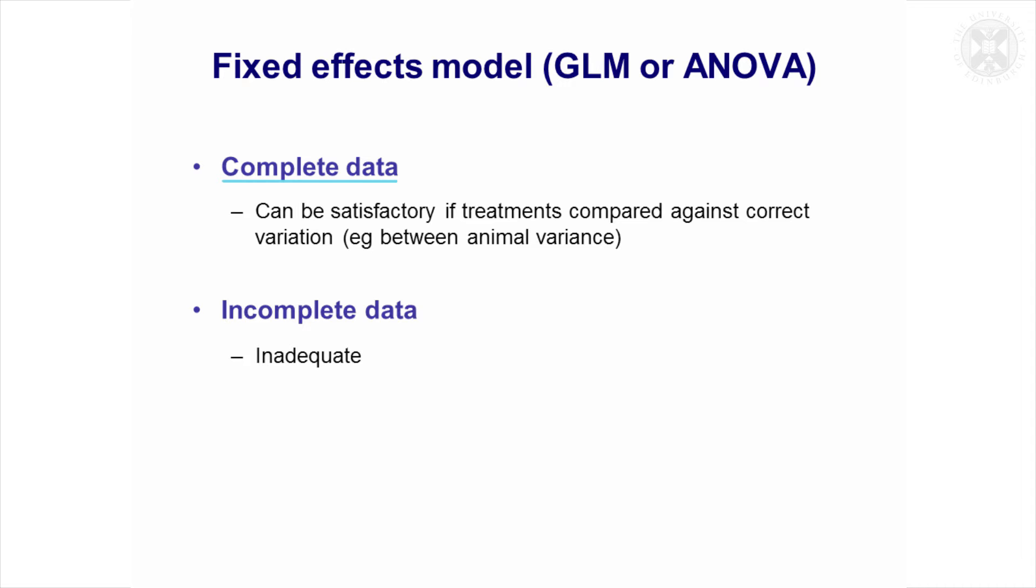And it's important if the data are complete and you take this approach to compare, I've put treatments here, but effectively the groups need to be compared against the correct unit of variation. So you can't treat all the observations, repeated observations, as if they were independent, you need to compare against the unit variance. If you were doing an experiment on animals, that would be the between animal variance rather than the within animal variance.